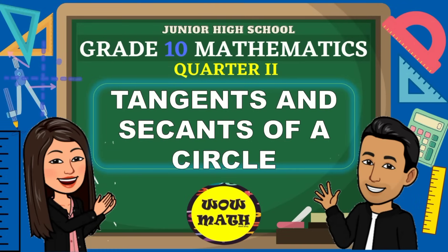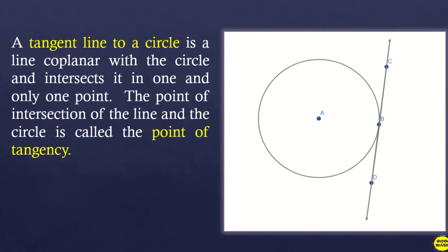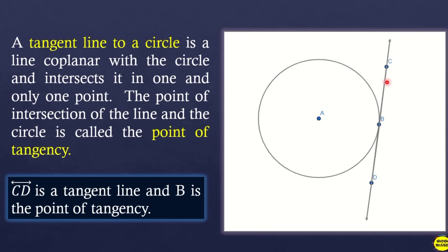Good day everyone. In this video lesson we will discuss tangents and secants of a circle. A tangent line to a circle is a line coplanar with the circle that intersects it in one and only one point. The point of intersection of the line and the circle is called the point of tangency. As you can see in the figure, line CD is a tangent line and point B is the point of tangency. A tangent intersects the circle at exactly one point.